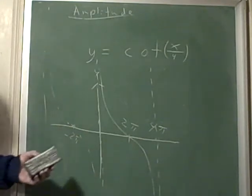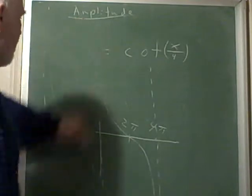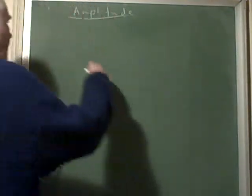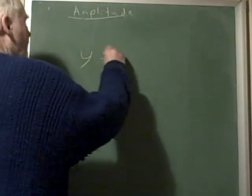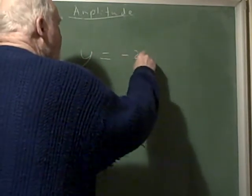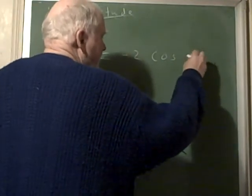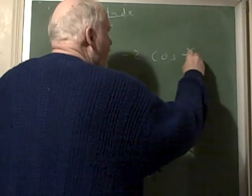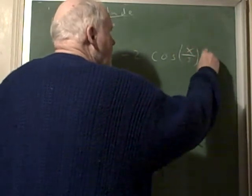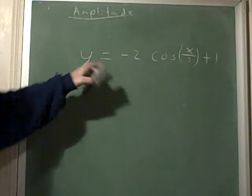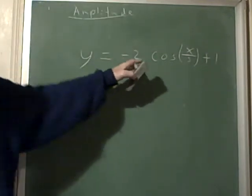Now you can also combine them all and make a very complicated deal. You can do something like y equals negative 2 times the cosine of x over 3 plus 1. This does everything: it tips it upside down, makes it go up 2 and down 2 instead of the normal 1, lowers it down 1 unit, and the period has been changed.